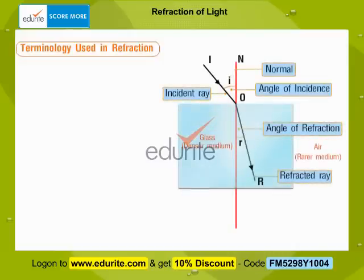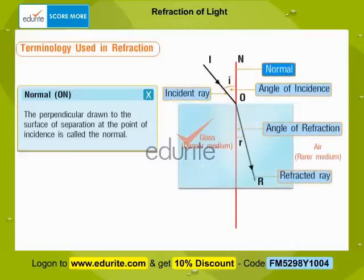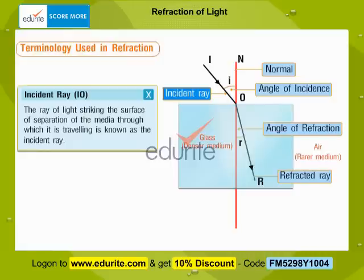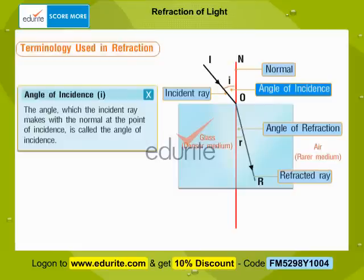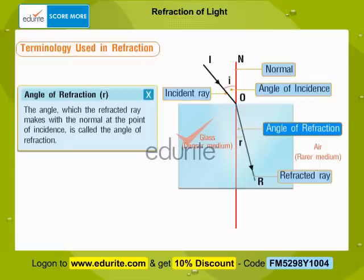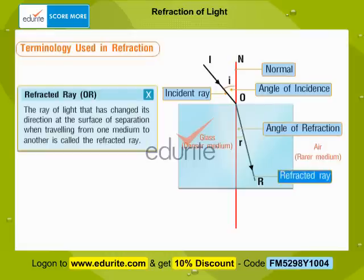For definitions, click on the labels. The perpendicular drawn to the surface of separation at the point of incidence is called the normal. The ray of light striking the surface of separation of the media through which it is travelling is known as the incident ray. The angle which the incident ray makes with the normal at the point of incidence is called the angle of incidence. The angle which the refracted ray makes with the normal at the point of incidence is called the angle of refraction. The ray of light that has changed its direction at the surface of separation when travelling from one medium to another is called the refracted ray.